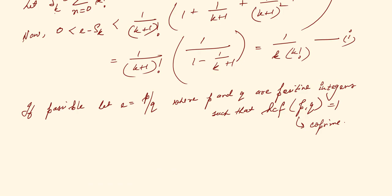What we have is that from equation 1, e minus S_q lies between 0 and 1 by q into q factorial, which implies that 0 is less than q factorial into e minus S_q and this is less than 1 by q. This is equation 2.